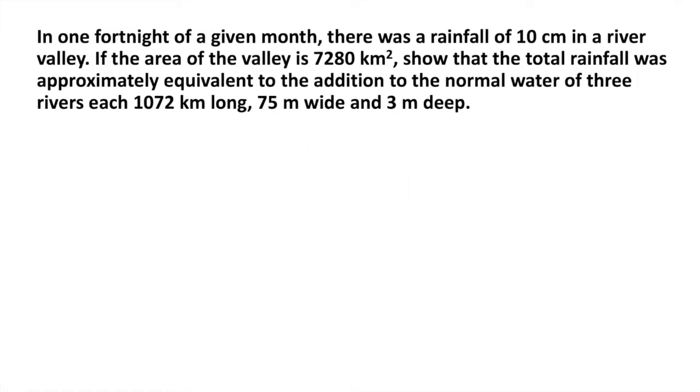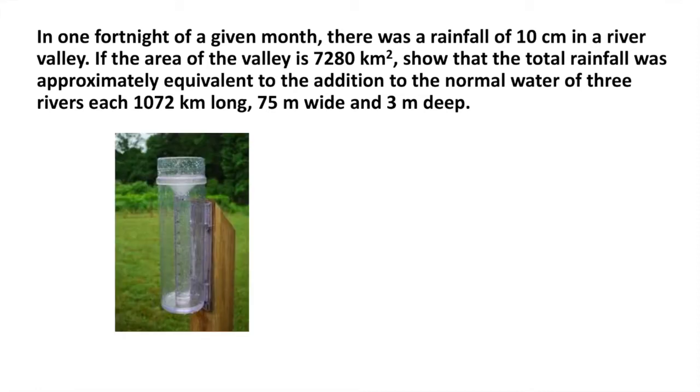This is the question. Fortnight means 14 days. In 14 days of a month there was a rainfall of 10 centimeters. How will we measure the rainfall? We are using this type of instrument to measure the rainfall in a unit of time. How much water is filled inside this instrument, that will be the measure of rainfall.